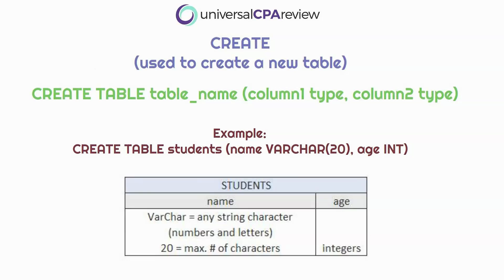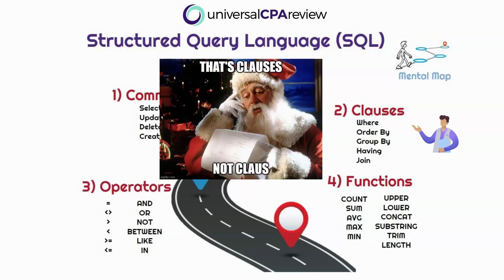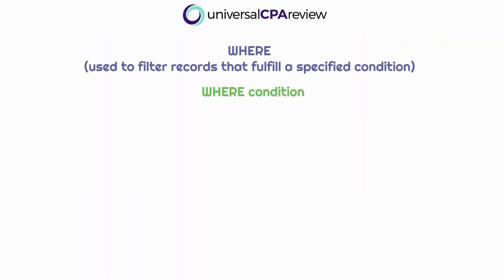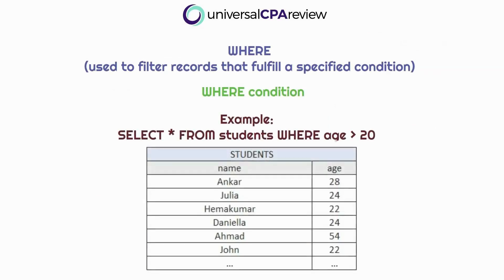Let's talk about clauses — these are used to refine our commands. Starting with the WHERE clause: it's used to filter records that fulfill a specified condition. If we want to select all students older than 20, we use WHERE age > 20. The key thing here is WHERE filters the results — we're still selecting all fields from the students table, but we filter with WHERE.